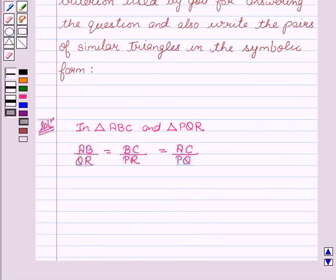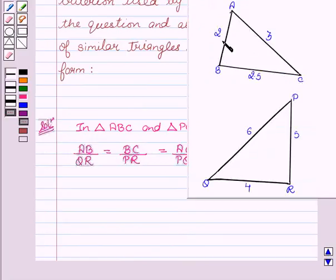From the figure, we see that AB equals 2, QR equals 4, BC equals 2.5, PR equals 5, AC equals 3, and PQ equals 6. This is equal to 1 upon 2. We see that all these sides are proportional to each other.